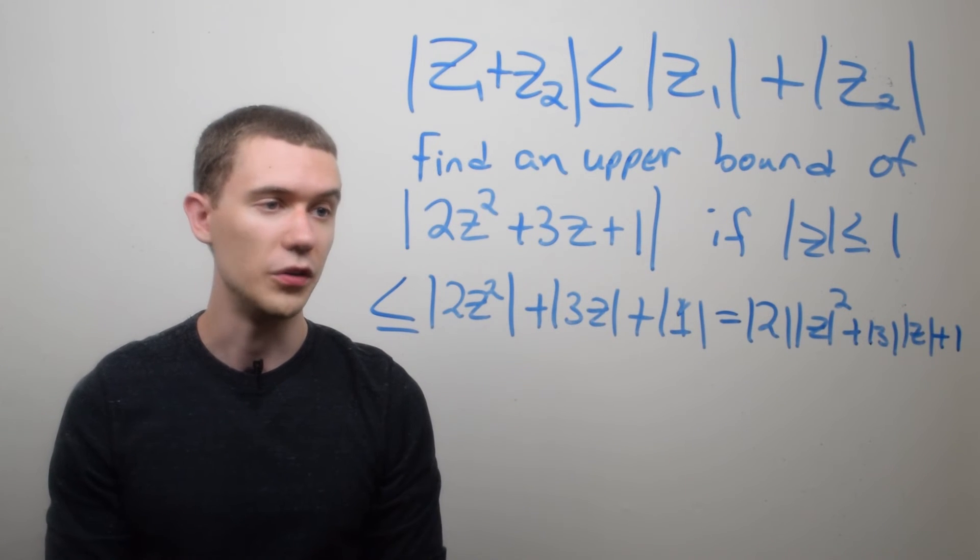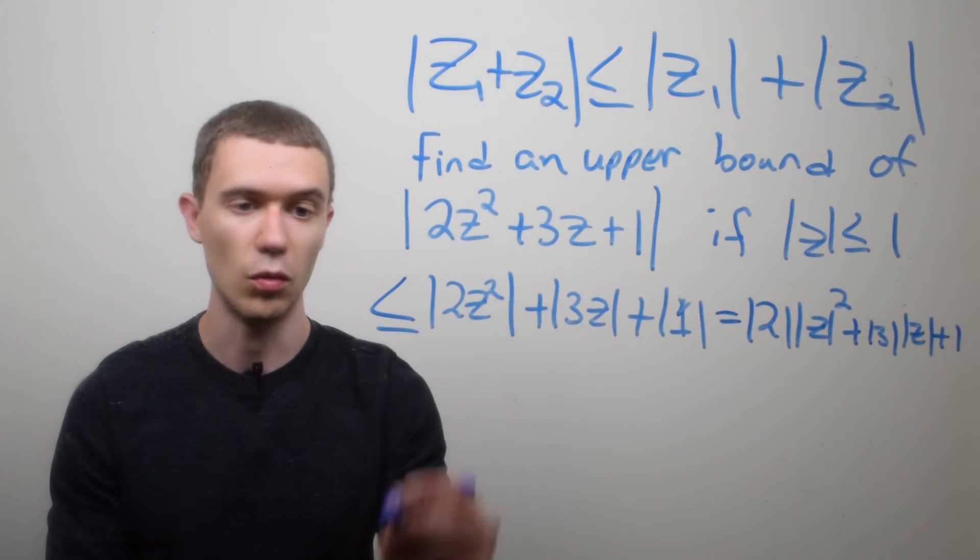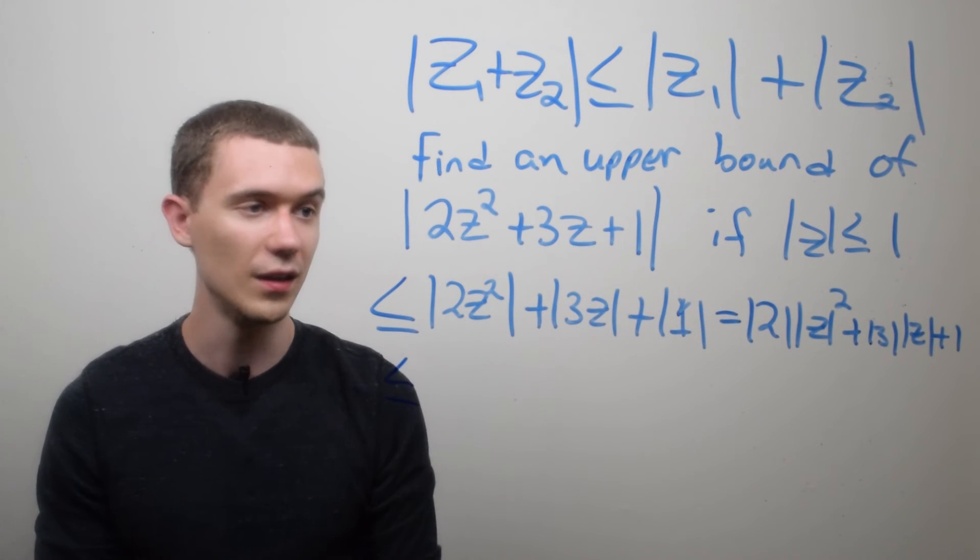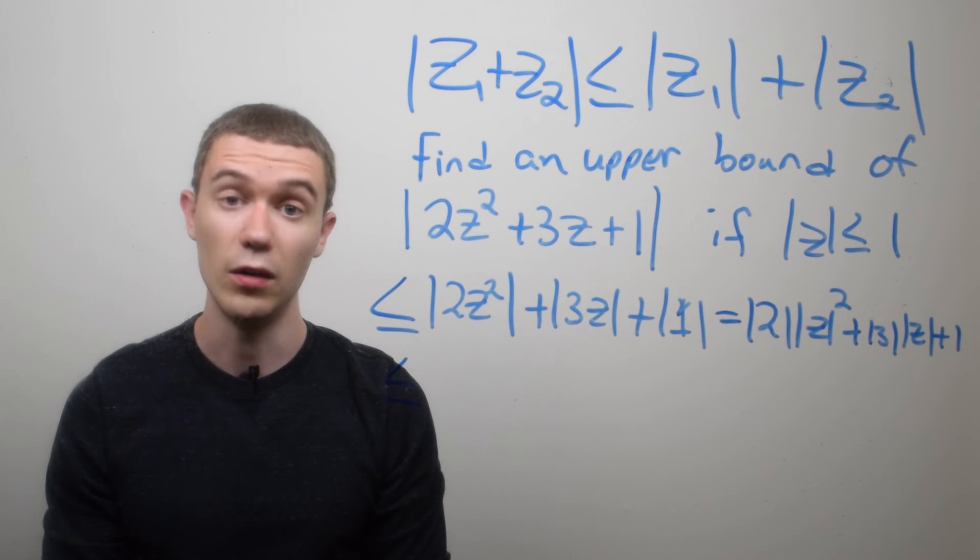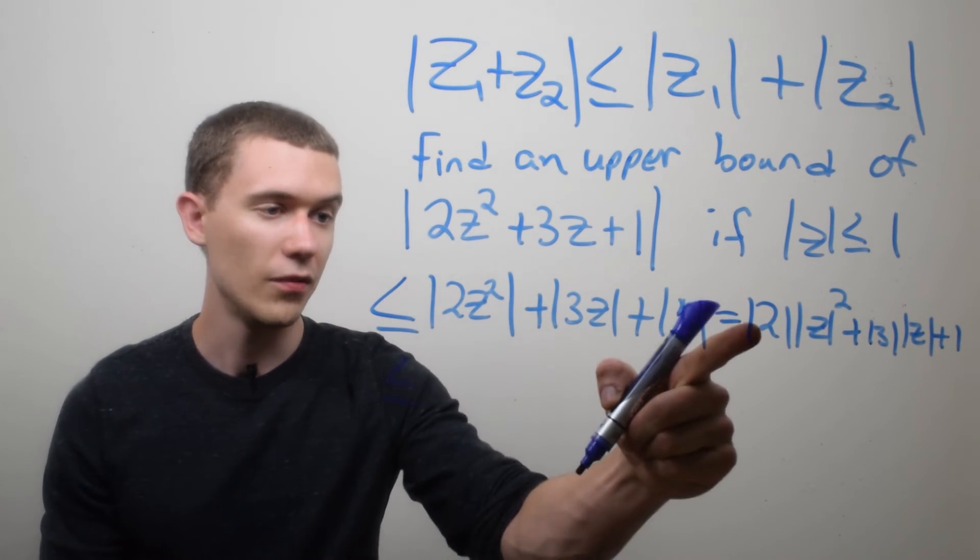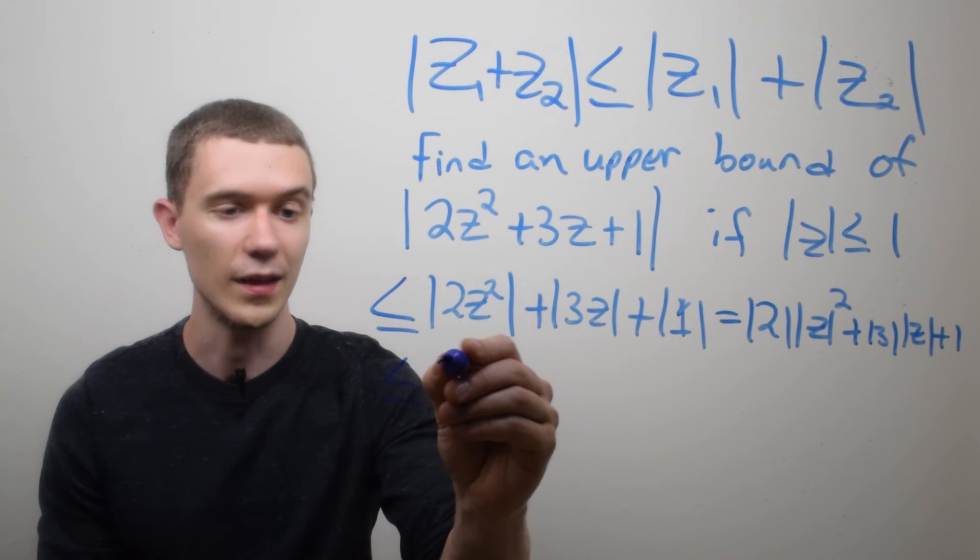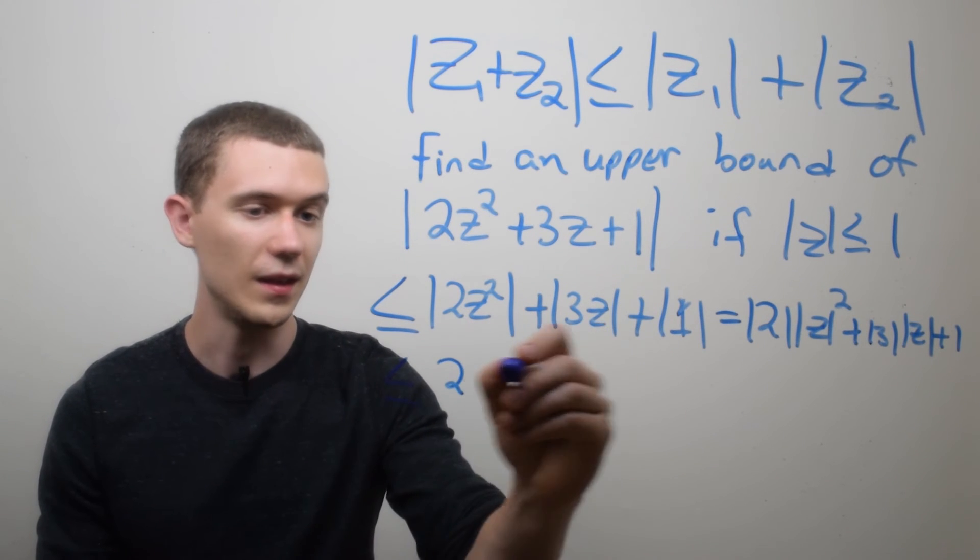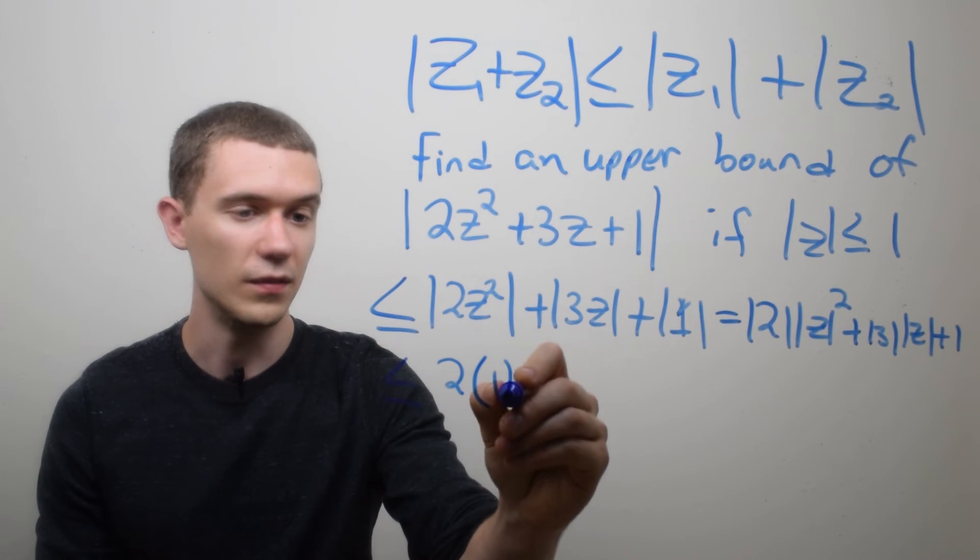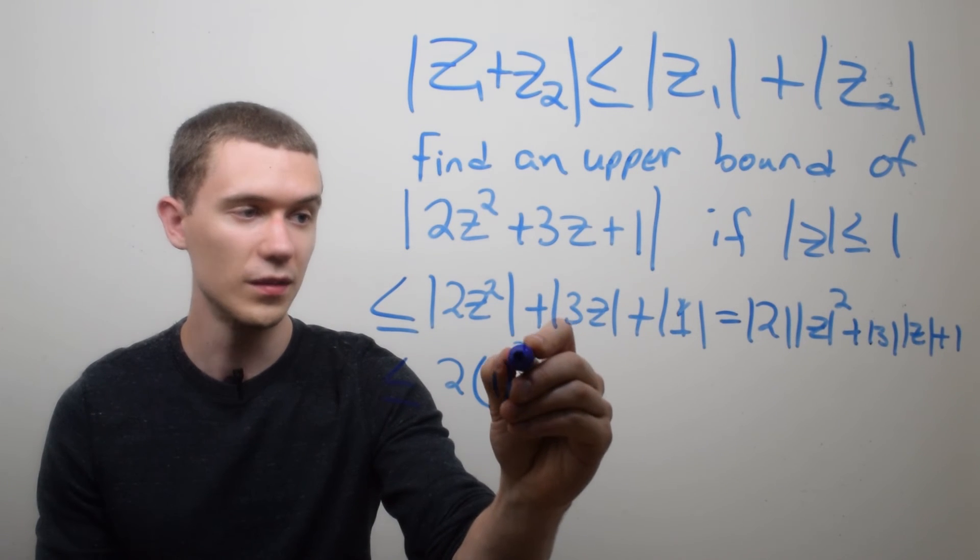And now what I'm going to do is use the other piece of information I have, the modulus of z is less than or equal to 1, to make another inequality. So I'll say that this whole thing is less than or equal to, and I'll just plug in 1 now wherever I see the modulus of z. So here we have the modulus of 2, the length of 2, 2 is a real number, its length is 2. I'm saying that the modulus of z is less than or equal to 1, so this is 1 squared.